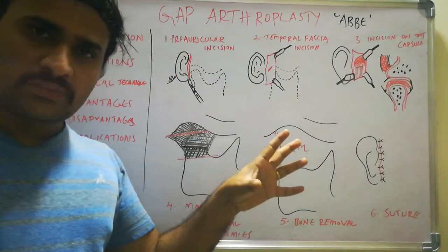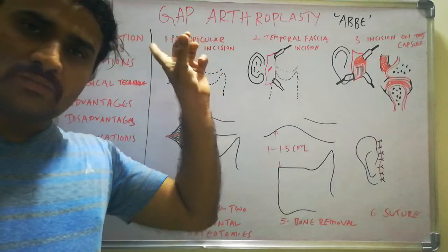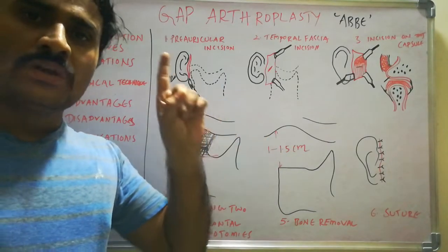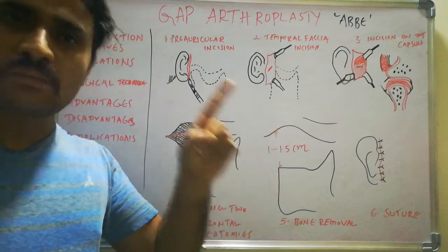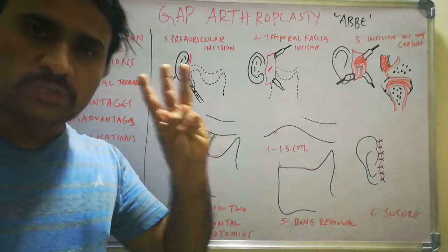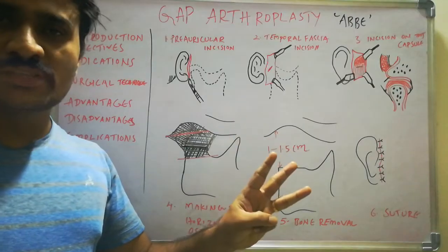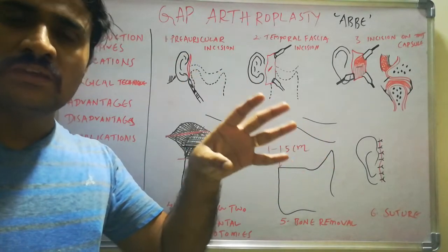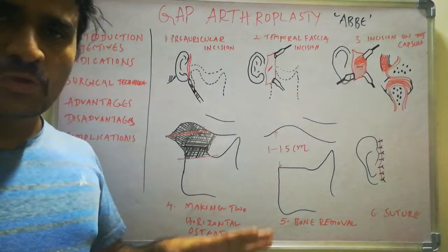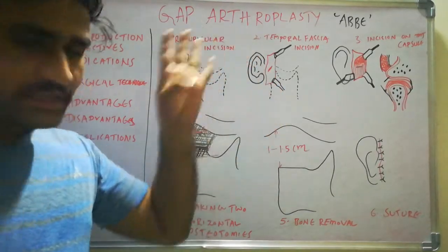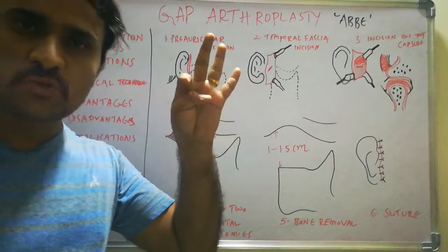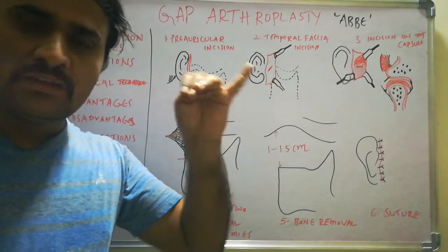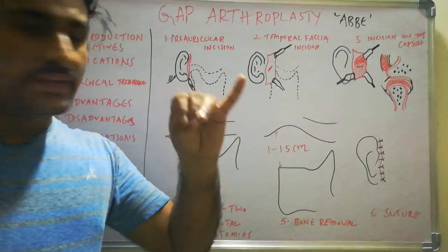The objectives of gap arthroplasty — and the other two treatment options as well — are: to restore jaw and mandibular function, to restore mouth opening, to treat facial asymmetries caused by TMJ ankylosis, and to promote normal temporomandibular joint growth in children who are still in their growth period.